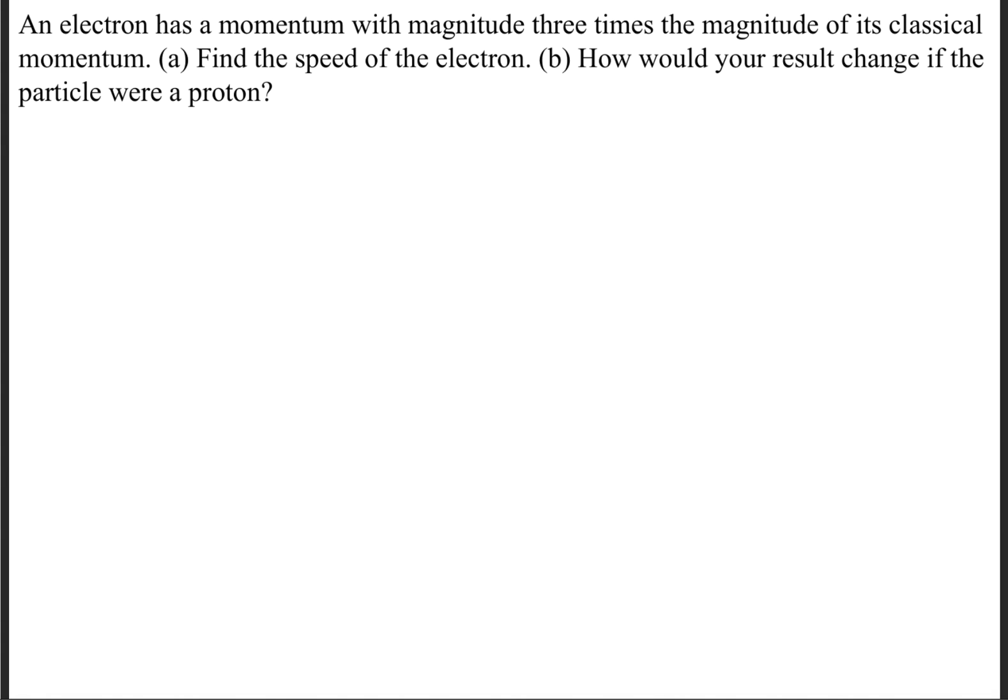The first thing we need to do is write the relationship between the magnitudes of the classical and the relativistic momentum. So the relationship that forms here is 3 times the classical momentum, which is equal to the relativistic momentum.